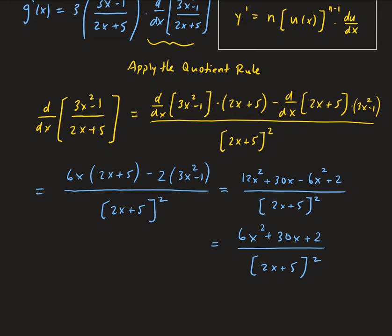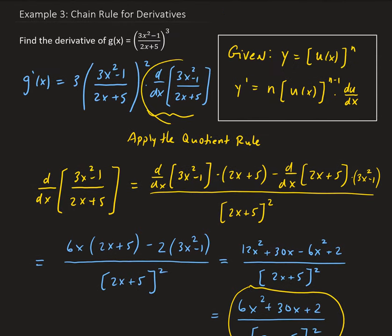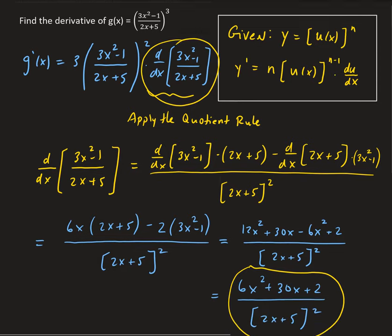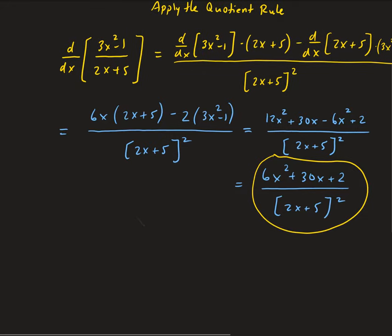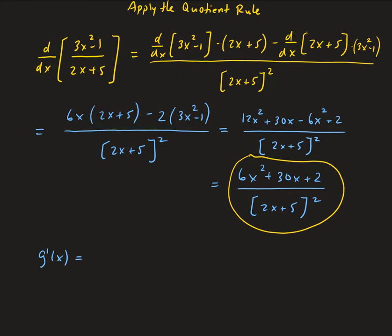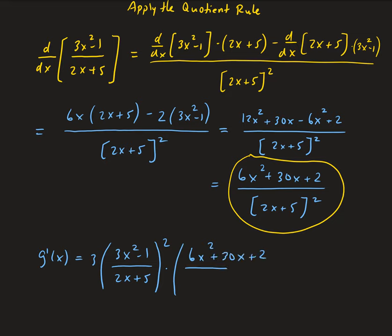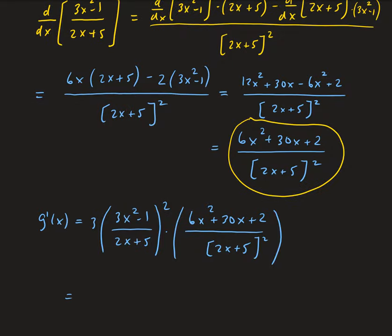So that whole expression is going to be plugged back in. Our result is that g prime of x equals 3 times 3x squared minus 1 over 2x plus 5 to the power 2, times 6x squared plus 30x plus 2, divided by 2x plus 5 squared. This gives us 3x squared minus 1 squared.